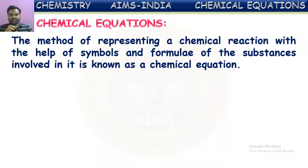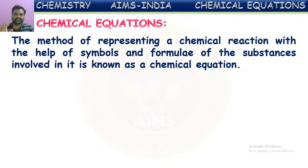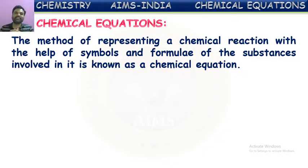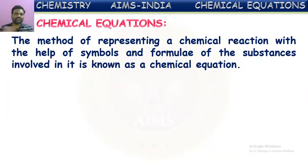In the same way, a formula is the shorthand representation of a compound. For example, instead of writing calcium carbonate completely, we can write CaCO3. So CaCO3 is called the formula of calcium carbonate. When compounds and elements combine to form a chemical reaction, the complete reaction can be represented using symbols and formulae of the substances participating and the products formed. That symbolic representation is known as a chemical equation.